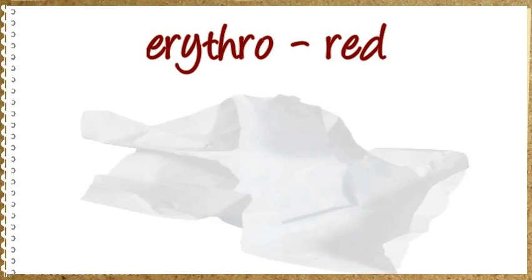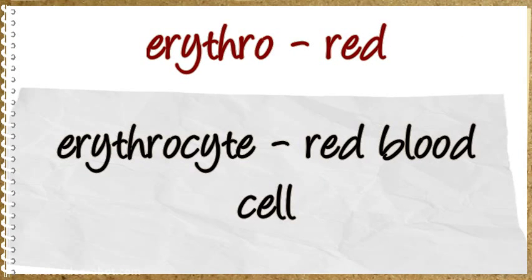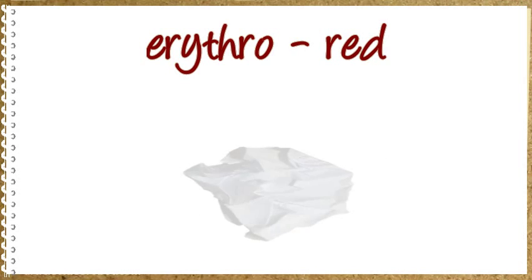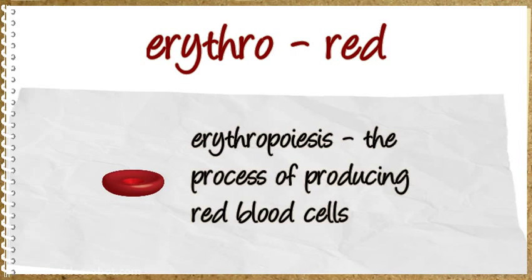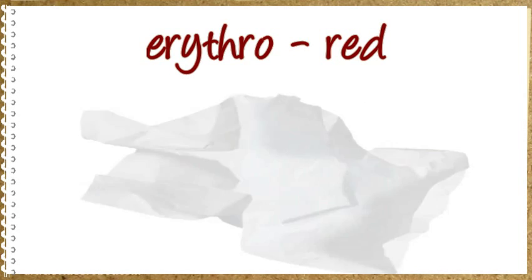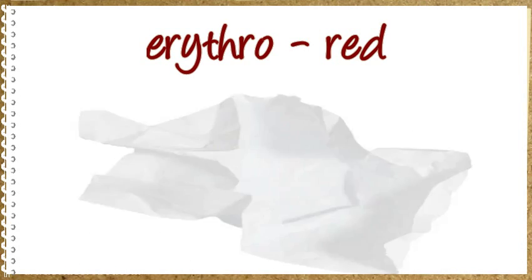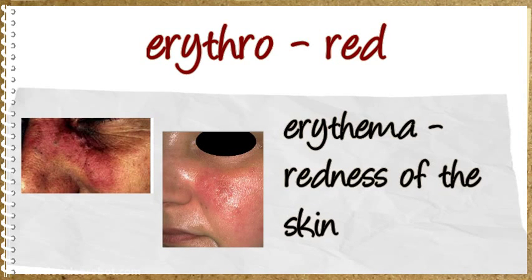Erythro means red. Erythrocyte: red blood cell. Erythropoiesis: the process of producing red blood cells. Erythromalgia: condition which causes excessive dilation of the blood vessels of the extremities making them feel hot and painful. Erythema: redness of the skin.